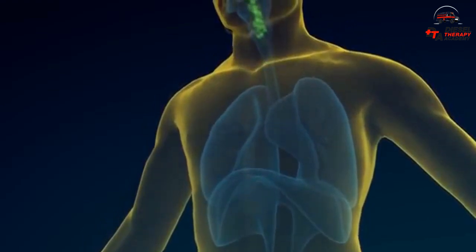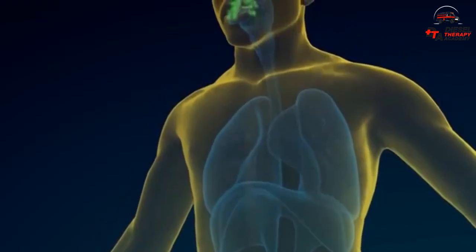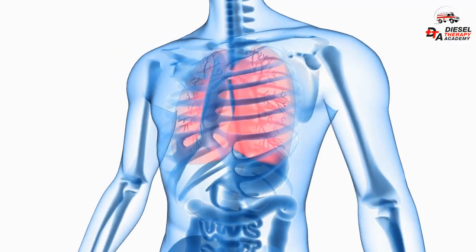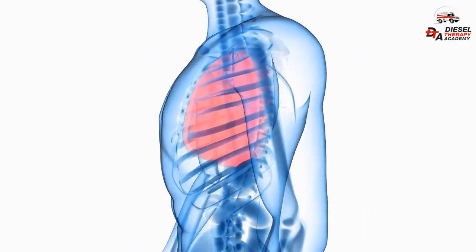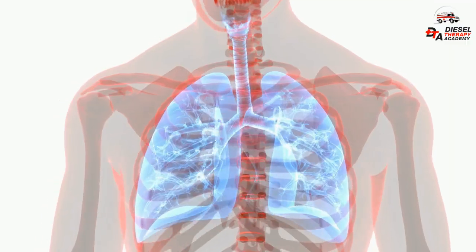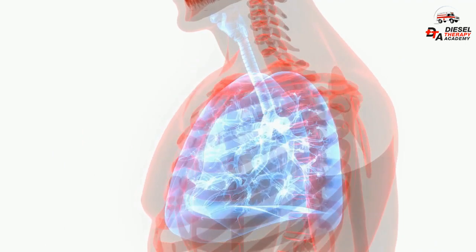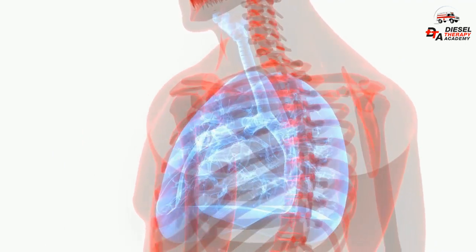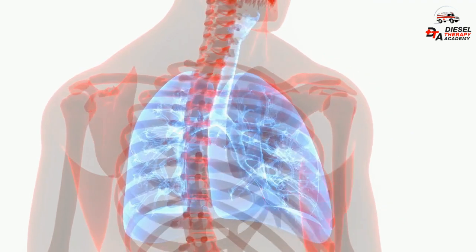Each respiratory cycle begins with inspiration and ends with expiration. During inspiration, the diaphragm and the external intercostals contract, causing enlargement of the thoracic cavity. As a result, intrapleural pressure decreases, and so does alveolar pressure, forcing the lungs to expand and air to move in.